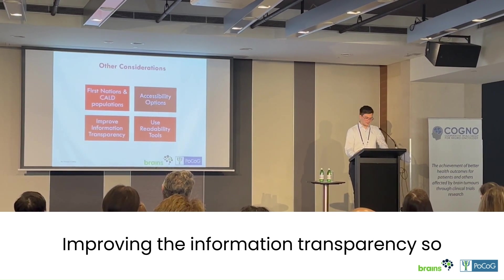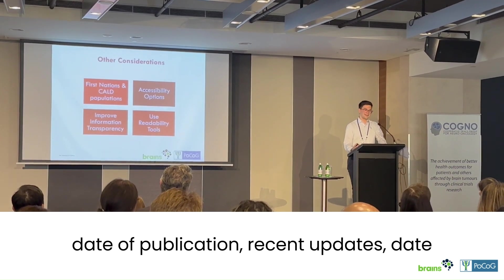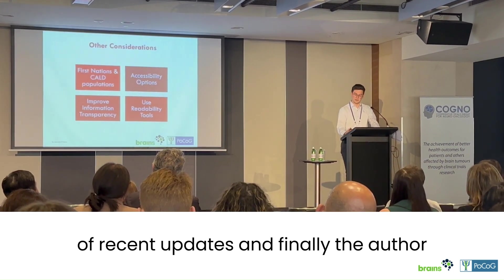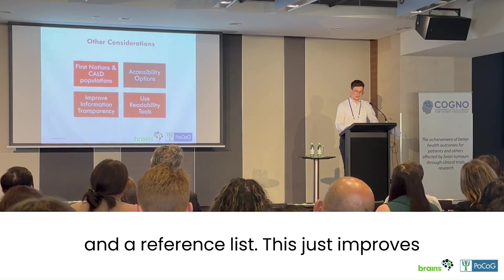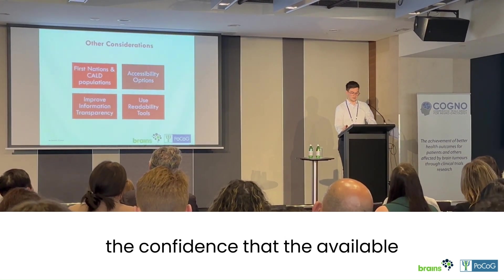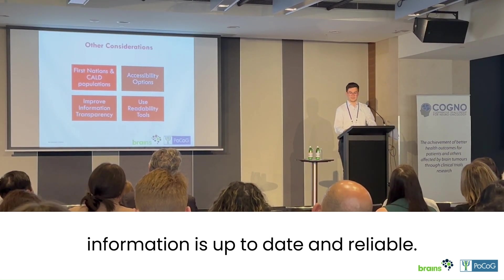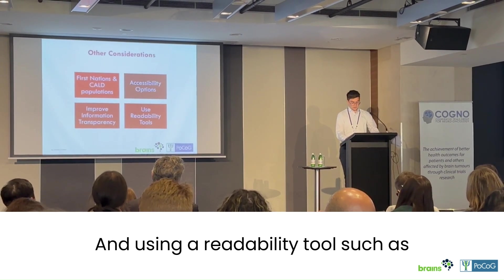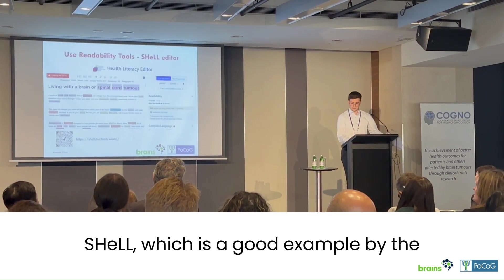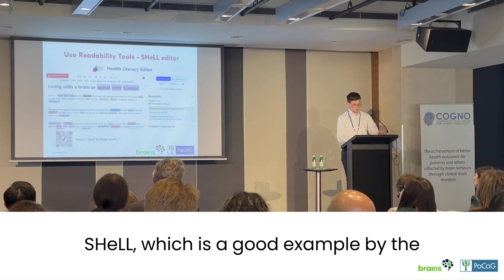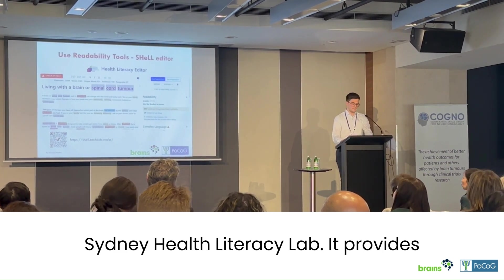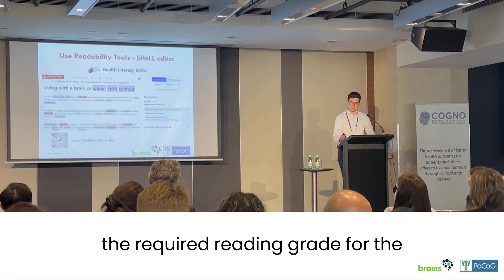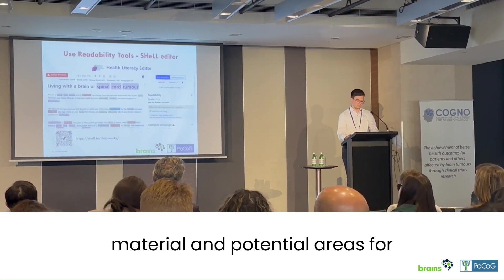Improving information transparency — such as publication date, recent updates, author information, and a reference list — improves confidence that available information is up-to-date and reliable. Using readability tools, such as Shell by the Sydney Health Agency Lab, provides the required reading grade of the material and highlights potential areas for improvement.